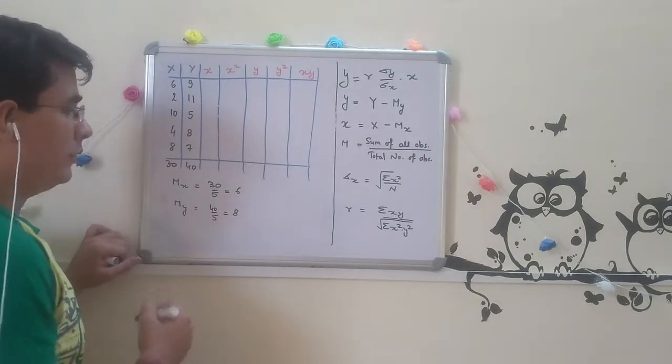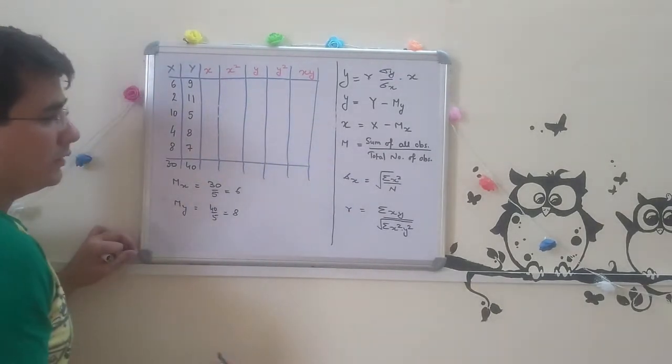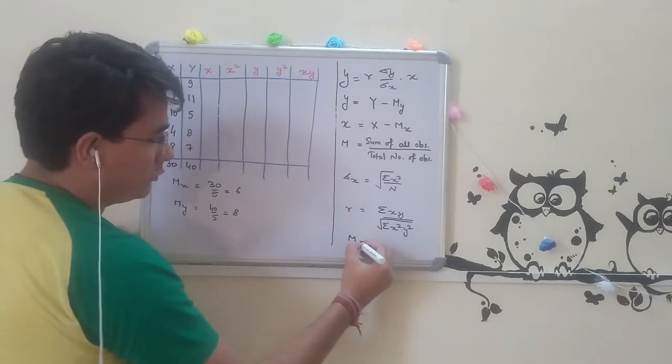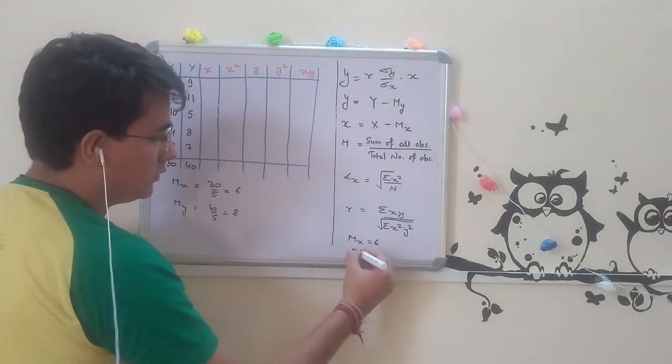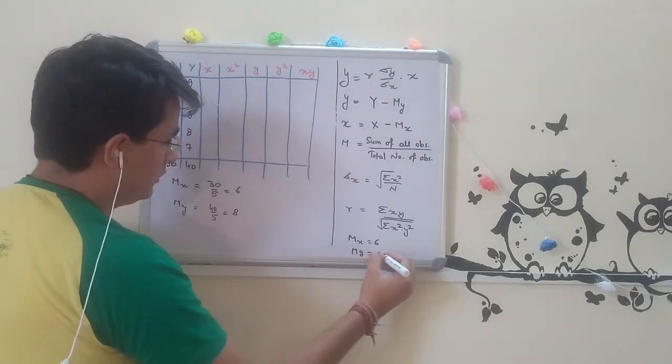We got mean of x and mean of y. So I am writing somewhere here for future reference. Mean of x is 6, mean of y is 8.